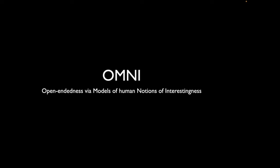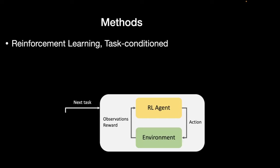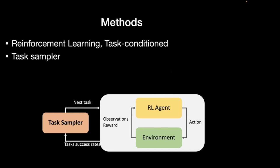OMNI uses a model of human notions of interestingness baked into a foundation model. We use reinforcement learning as our learning algorithm — it's task-conditioned, so we give the agent a task and it has to learn how to do it. We have a task sampler acting as a teacher, and it has two components: ensuring tasks have high learnability or learning progress, and also ensuring they are interesting — to avoid problems like endlessly memorizing digits of pi.